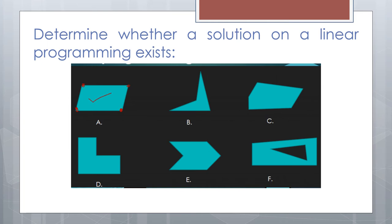For a shape where one interior angle measures more than 180 degrees, this is not convex. Although it is connected, it fails the convex condition.